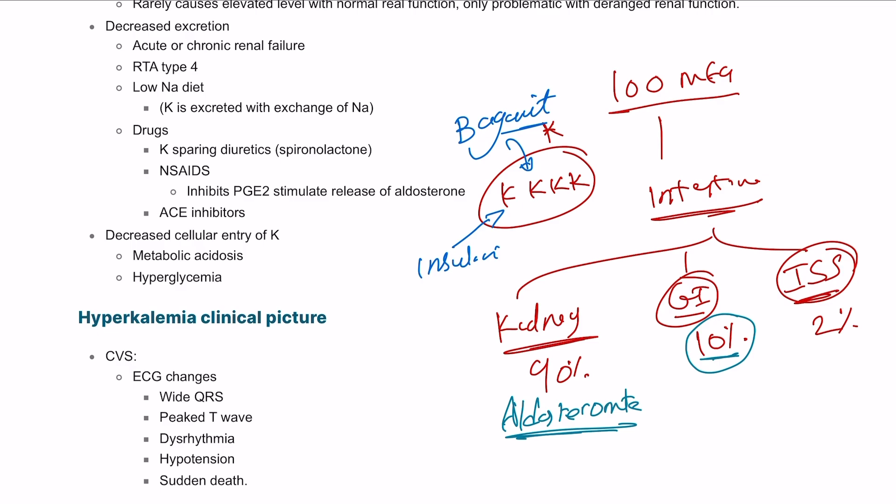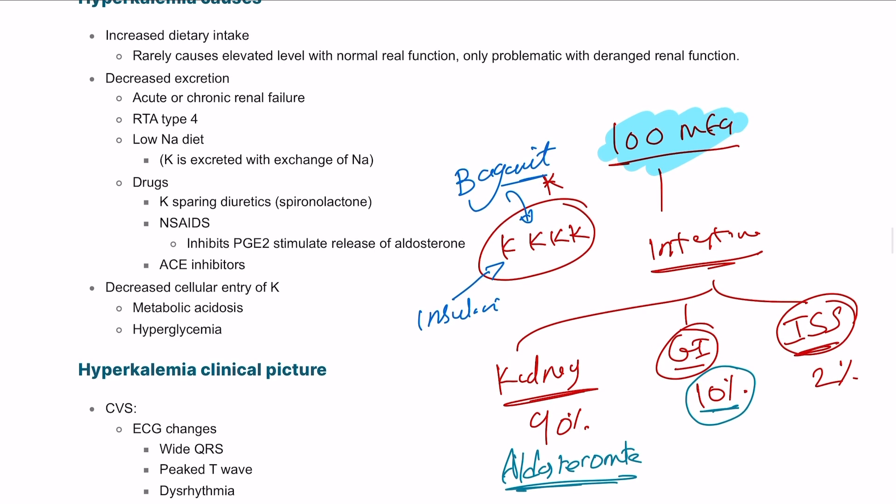Talking about the causes of hyperkalemia or increased potassium level, increased intake of potassium can lead to increased serum potassium level. However, our body is able to maintain it unless we have a problem such as kidney issue, which is mainly excretion. That's why renal failure patients will be on a low potassium diet.